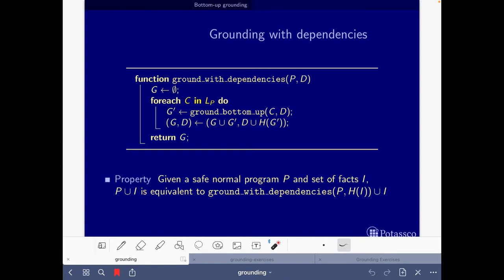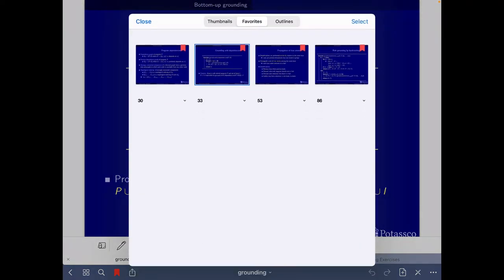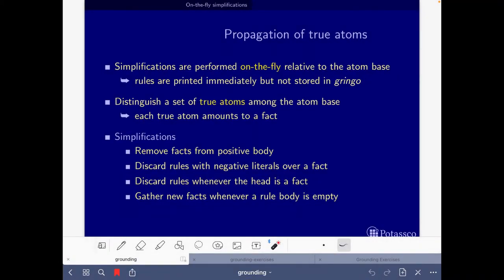And actually, we are not going just to be doing this ground bottom-up algorithm, because we are going to be applying these on-the-fly simplifications that are described at a very high level here. So whenever we have a ground rule, we are going to remove the facts from the positive body. And we are going to discard the rules with negative literals over a fact, because we know those rules will never be fired.